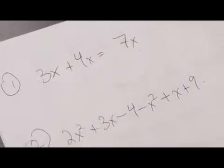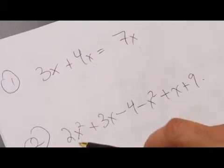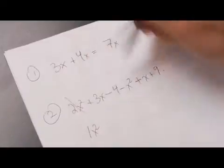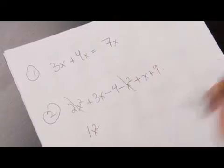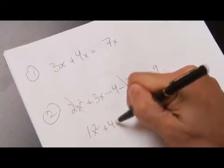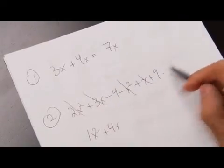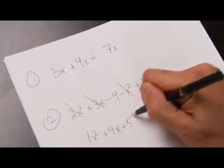We're trying to solve this by combining like terms. We have 2x squared minus x squared, so we have 1x squared which cancels these two out. Then we have 3x plus x, so we have plus 4x which cancels these out. Then we have negative 4 plus 9 which means we have plus 5.